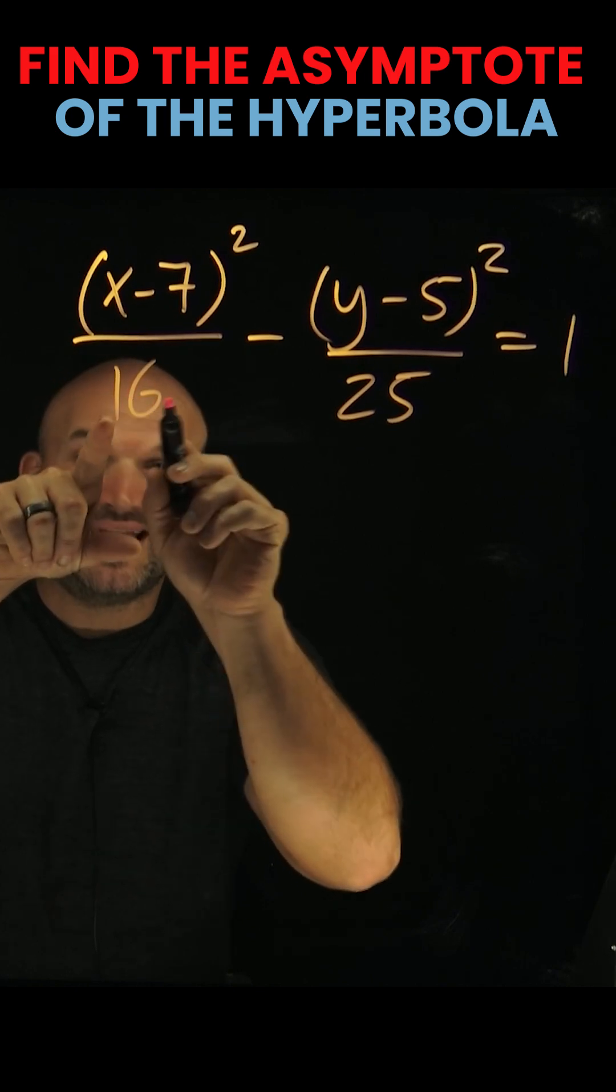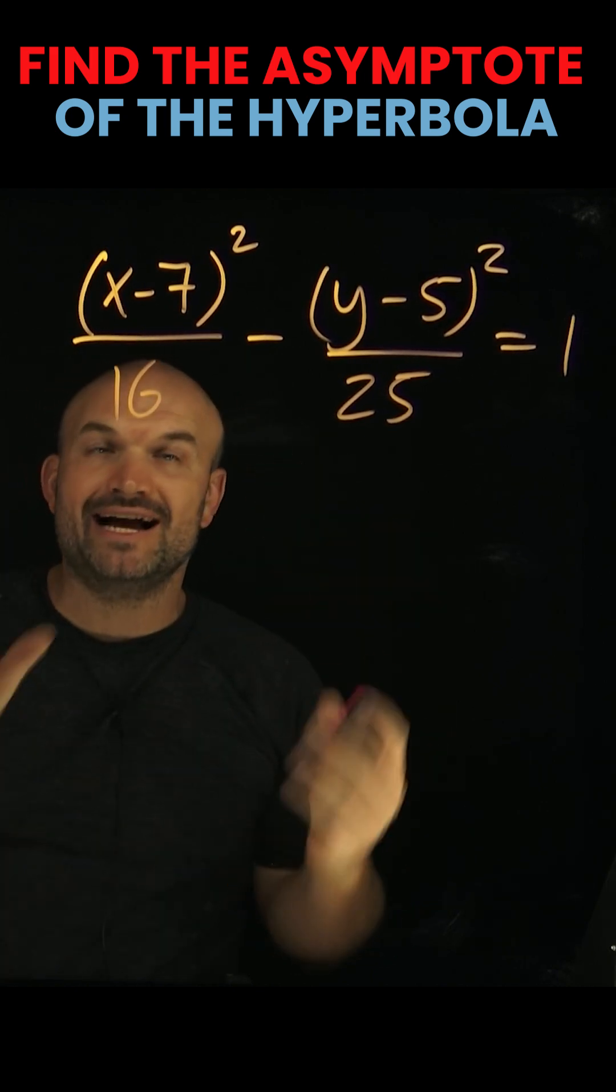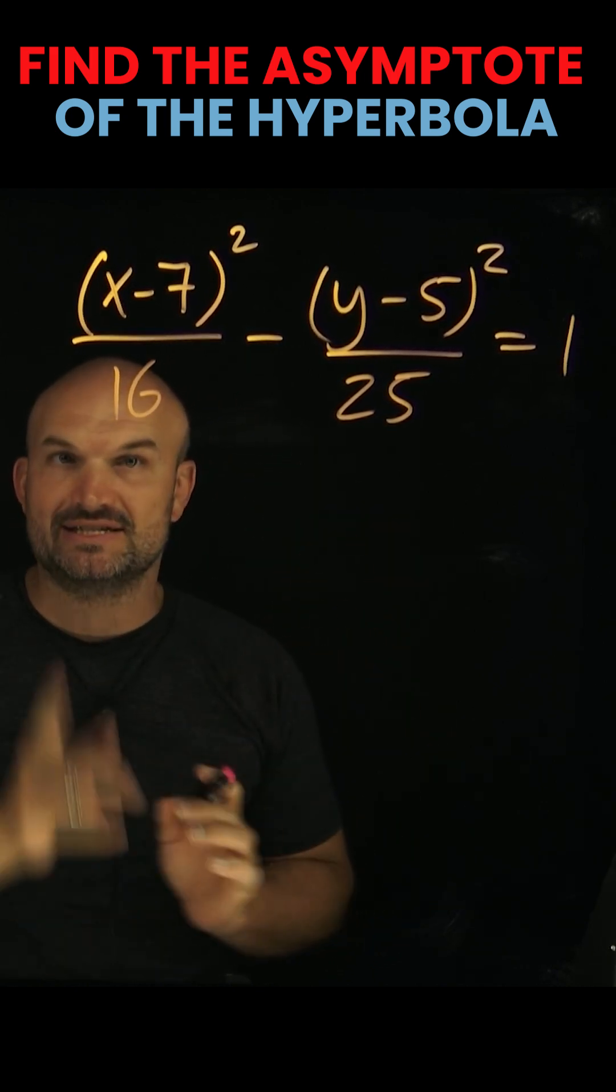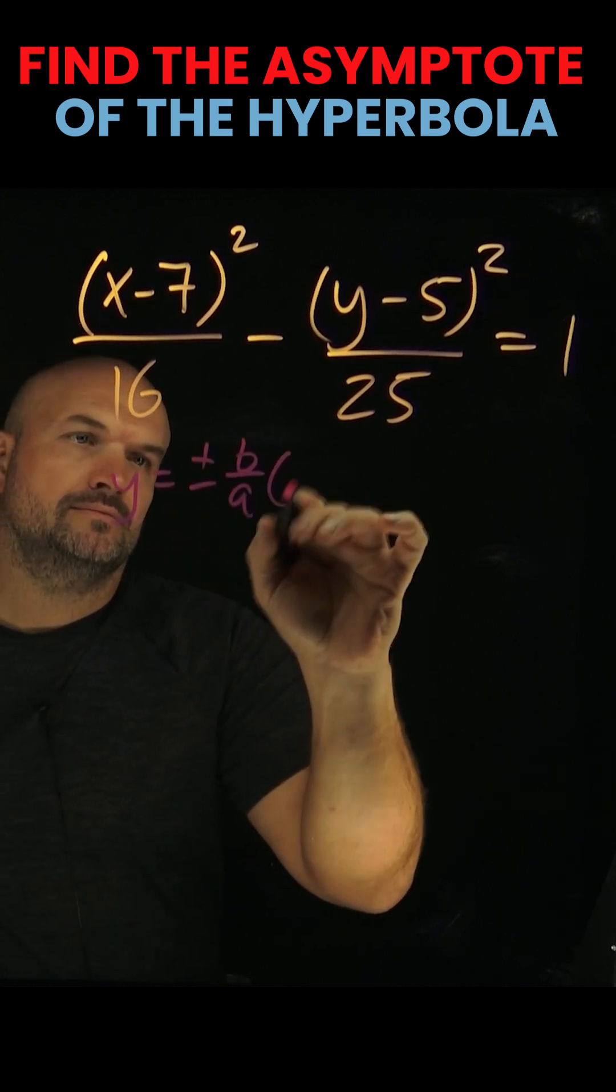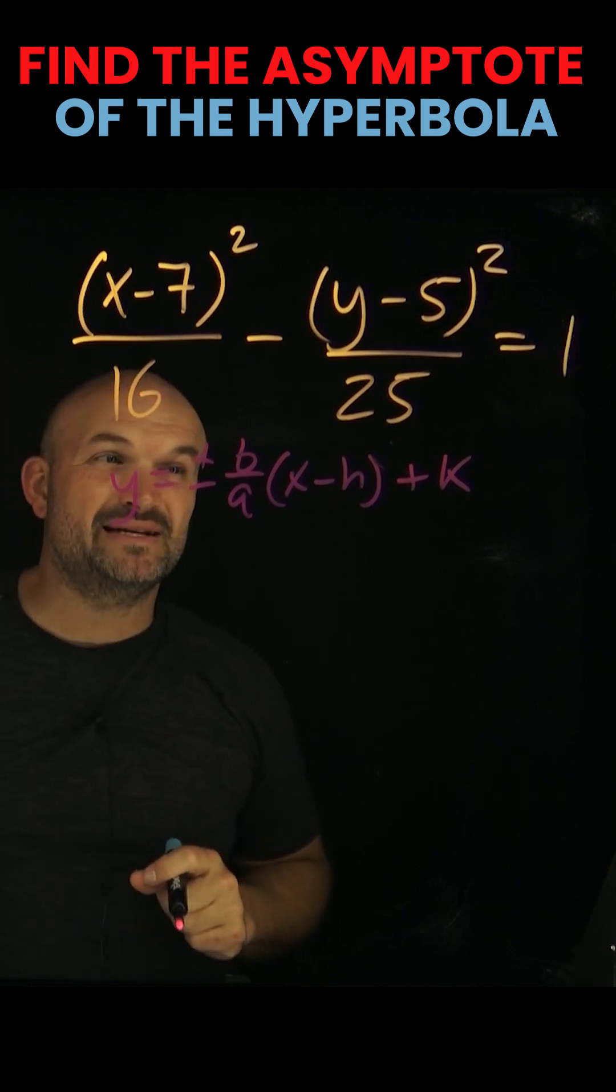Since my x is over my a squared for the equation of a hyperbola, I know this is going to be a horizontal transverse axis. That tells me that my equation of my asymptote is going to be y equals plus or minus b over a times x minus h plus k.